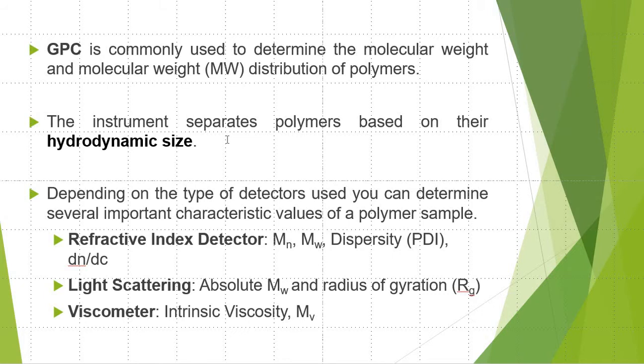In multi-detector GPC systems, you'll often find a light scattering detector along with the RI, which allows you to calculate the absolute molecular weight and radius of gyration. A viscometer can provide additional insight by providing the intrinsic viscosity and viscosity average molecular weight.